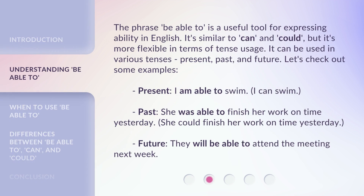The phrase 'be able to' is a useful tool for expressing ability in English. It's similar to 'can' and 'could,' but it's more flexible in terms of tense usage. It can be used in various tenses: present, past, and future.